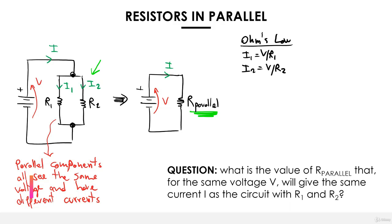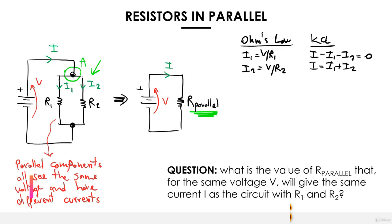Now we want to connect i1 and i2 with i. We can apply Kirchhoff's current law to be more rigorous. We choose a node — one used by i1 and i2 — and write: i minus i1 minus i2 equals zero, summing all currents entering the node and subtracting those leaving. This simply tells us that i is equal to i1 plus i2.